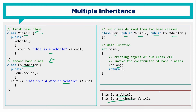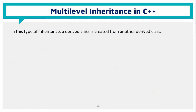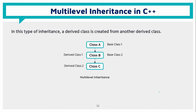In multilevel inheritance, a base class has a subclass, and that subclass itself has another subclass. For example: class A is the base, class B is derived from A, and class C is derived from B.